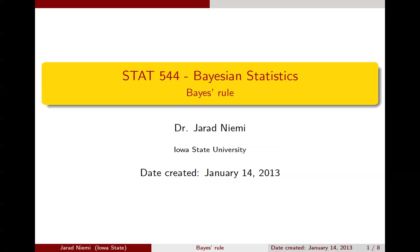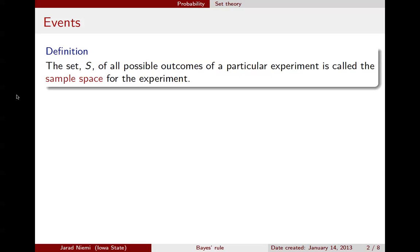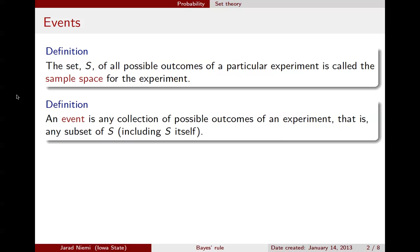We begin by providing a set of definitions before we get to Bayes' Rule. The first definition is that for a sample space. The set S of all possible outcomes of a particular experiment is called the sample space for the experiment. The second definition is the definition for an event. An event is any collection of possible outcomes of an experiment, that is, any subset of the sample space S.